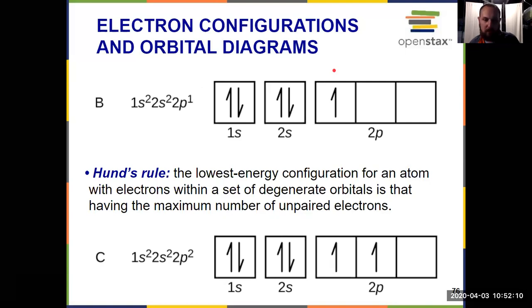And then when we go to carbon, which has an additional electron, now we're up to six total, that electron configuration 1s² 2s² 2p². And now we're faced with a dilemma. Do I put that extra arrow in an empty box or do I pair it up with the one from boron? And we have a rule for that.